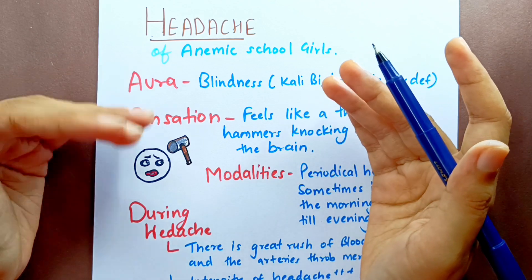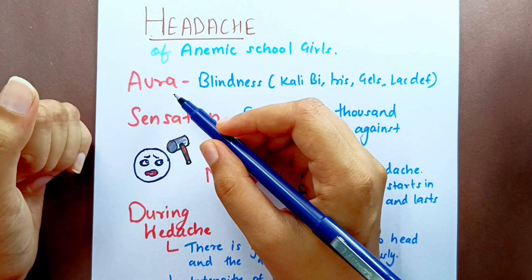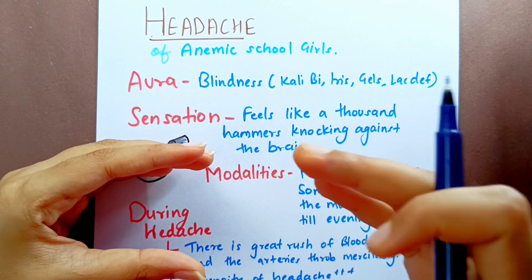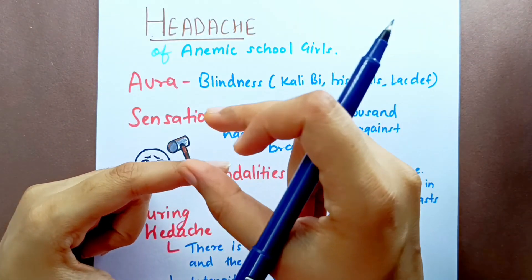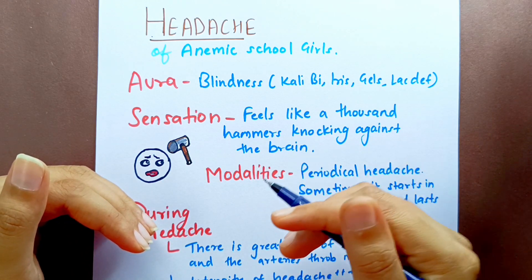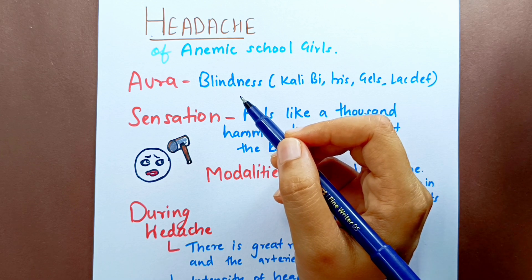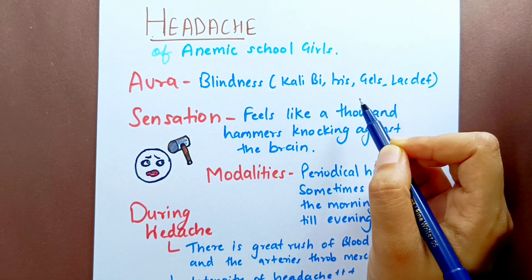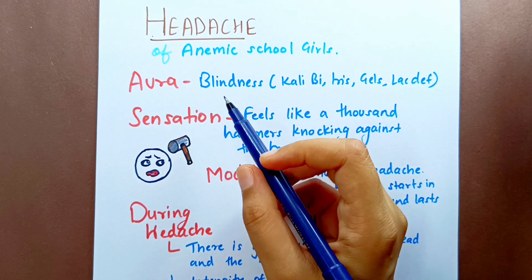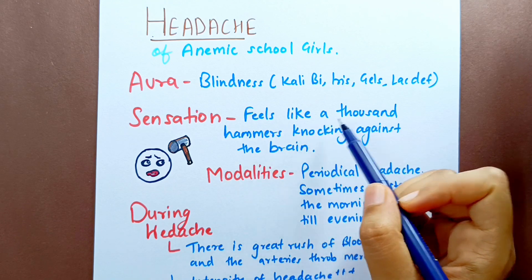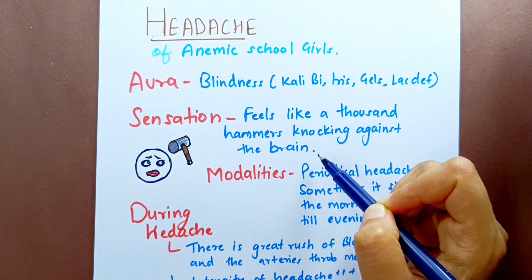Migraine has a few stages. The aura — symptoms that appear just before the actual pain starts — in Natrium Muriaticum is blindness: patients have a sensation of blindness and cannot see properly before the headache begins. This is also seen in Kali bich, Iris, Gelsemium, and Lac defloratum.